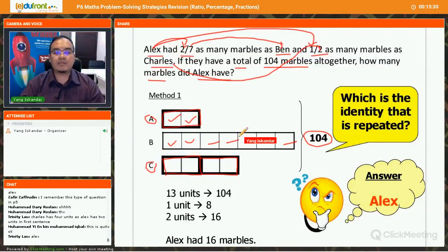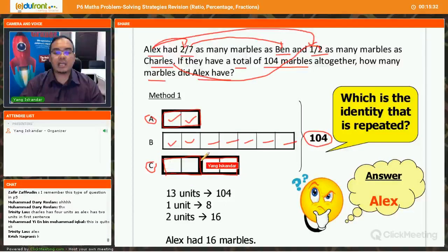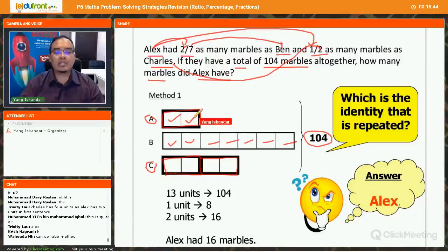Okay? So you can see here, now 104, there are 13 units. 1, 2, 3, 4, 5, 6, 7, 8, 9, 10, 11, 12, 13. So 13 units is 104. 1 unit is 8. You just divide 104 divide by 13. Then the question asks, how many marbles did Alex have? So Alex has 1, 2 units. So 2 units is 16. How did I get 16? 8 multiplied by 2. Okay? So Alex had 16 marbles. Okay? Now this is the model method.